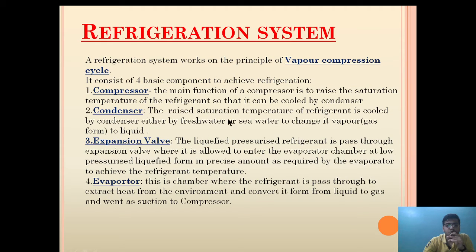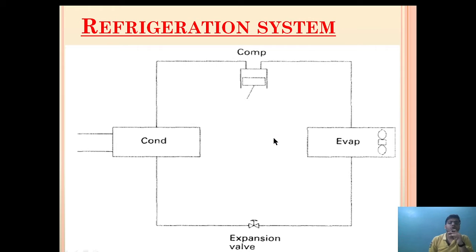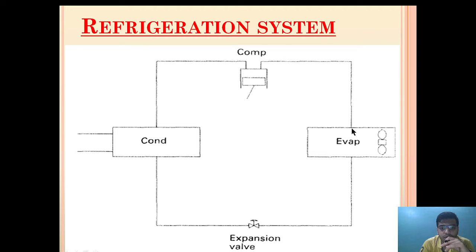The raised saturation temperature of the refrigerant is cooled by the condenser, either by fresh water or seawater, to change its vapor form. The whole system can also be subdivided into two parts: a high pressure system and a low pressure system. From the evaporator to the compressor, this part is the low pressure zone — the gas is in low pressure. From the discharge of the compressor to the inlet of the expansion valve, this area is high pressure.